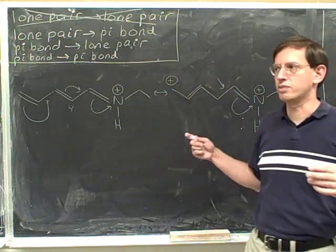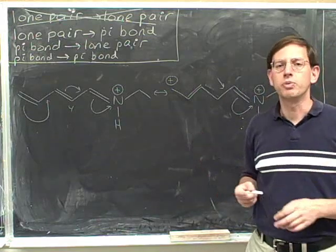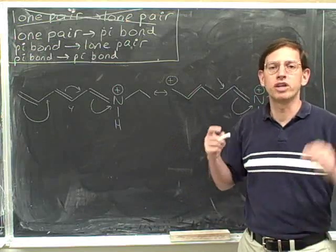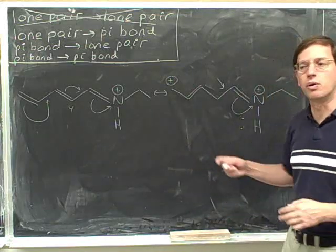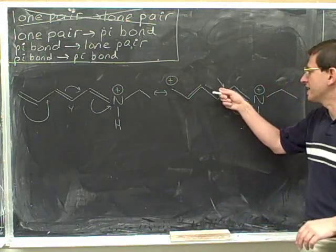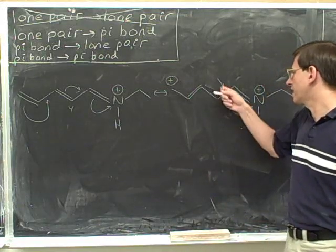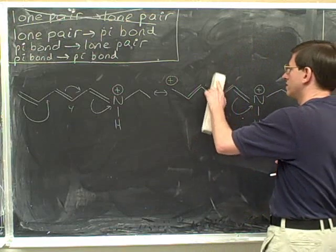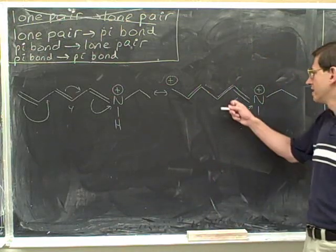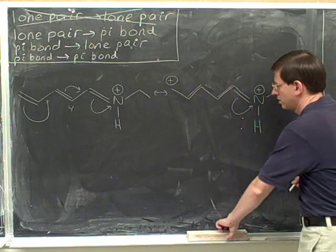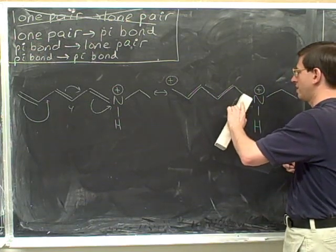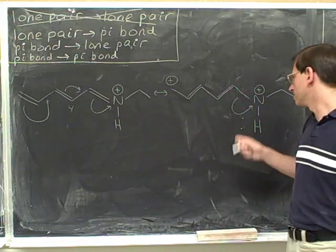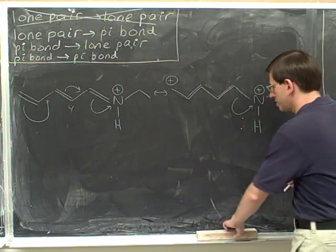Notice that we're still using the same techniques as when there were only two arrows. We work with a tail, then a head, then the next tail, then the next head. Every time we've dealt with one part of the arrow, we erase that part and go on to the next. Now we still have this head, which again indicates the formation of a pi bond, so I'll draw the pi bond. No need to change the charge — we're in the middle of the string of arrows. We erase that head. Now we're at this tail, which shows we're moving the pi bond, so we erase that pi bond. We're still in the middle of the string of arrows, so there's no need to change any charges. We just erase that tail.